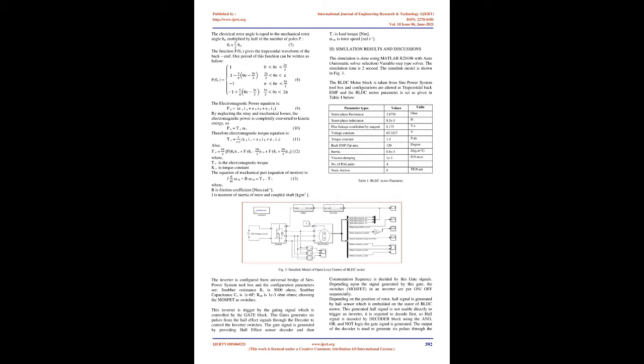An inverter is a circuit which converts DC power into AC power at a desired output voltage and frequency. This conversion can be achieved either by controlled turn-on and turn-off devices (e.g., BJTs, MOSFETs, IGBTs, MCTs, SITs) or by forced commutated thyristors, depending on the application. Inverters are mainly classified as voltage source inverter (VSI) and current source inverter (CSI). The VSI consists of a stiff voltage source with negligible internal impedance, whereas the CSI typically consists of a stiff current source which is DC in nature. The transition of firing pulses from one power switch to another in a defined sequence is termed as a step.